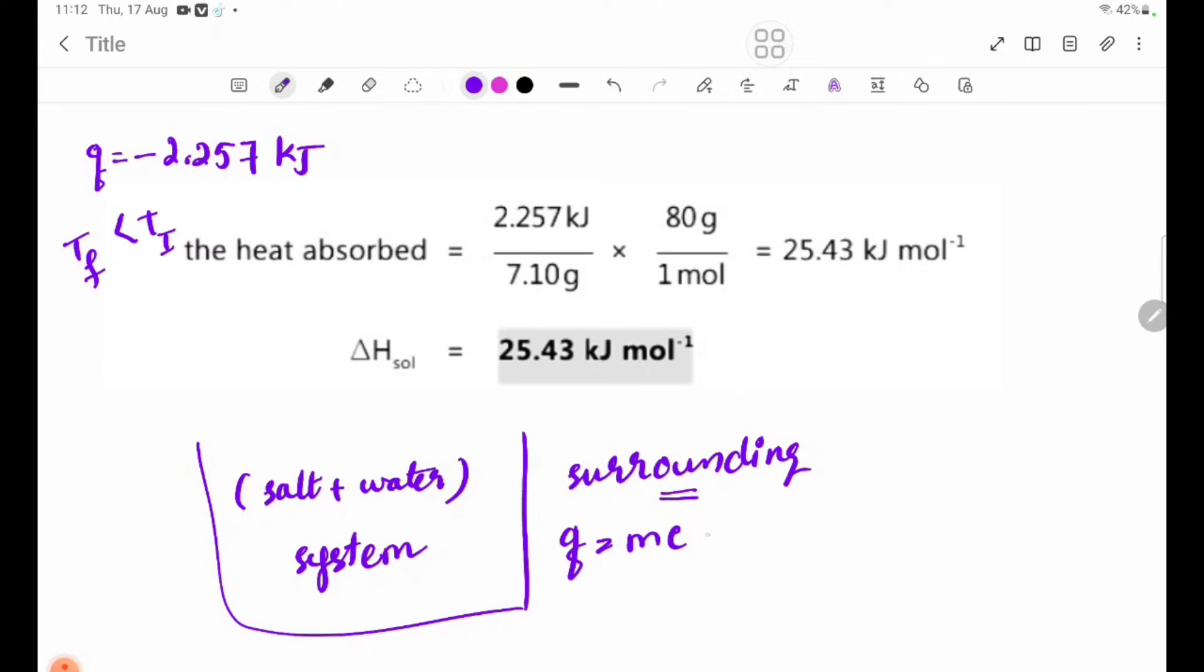Q equals mc delta T. This is the surrounding. The heat absorbed by the surrounding is released by the system. If the heat is released by the surrounding, the reaction system will absorb the heat.